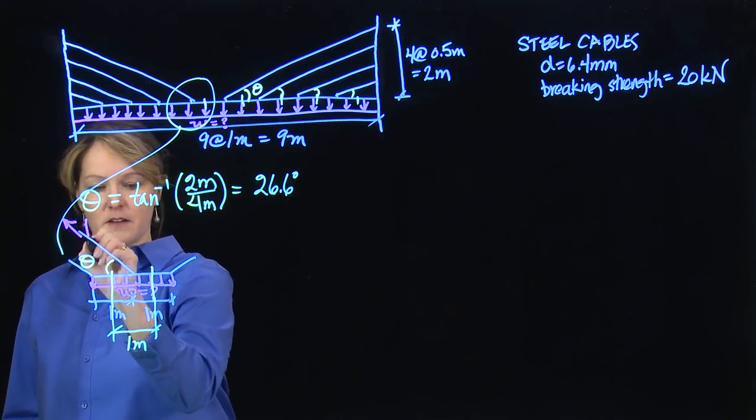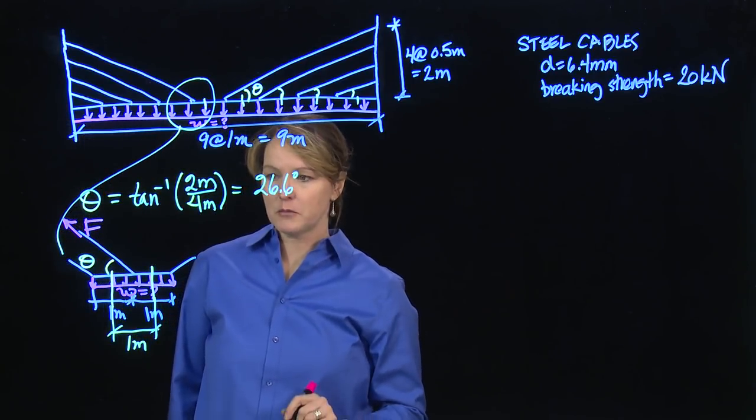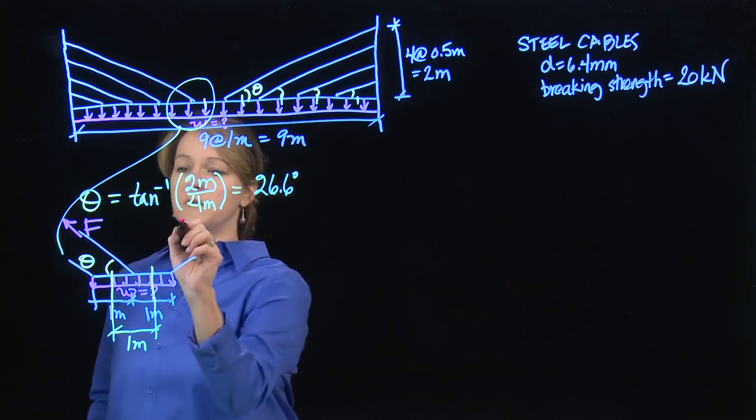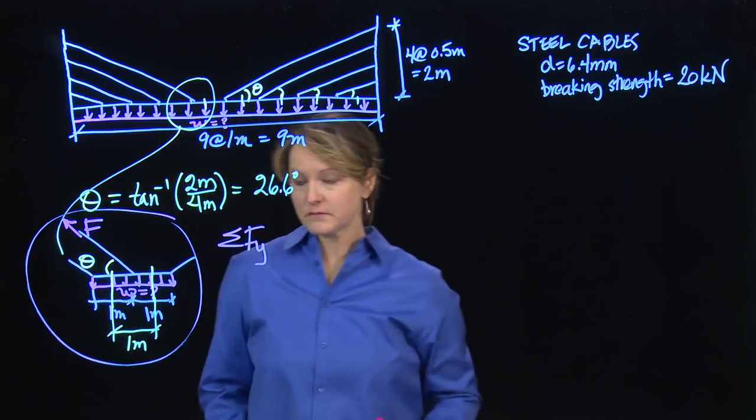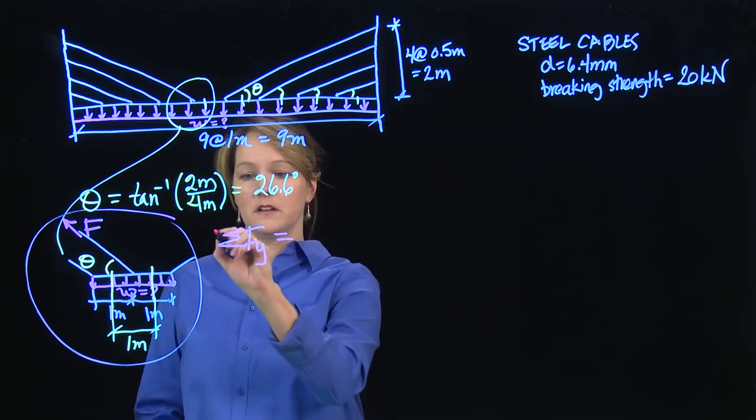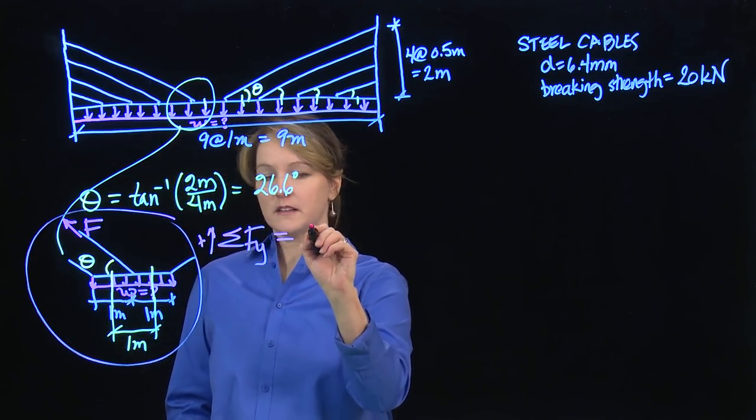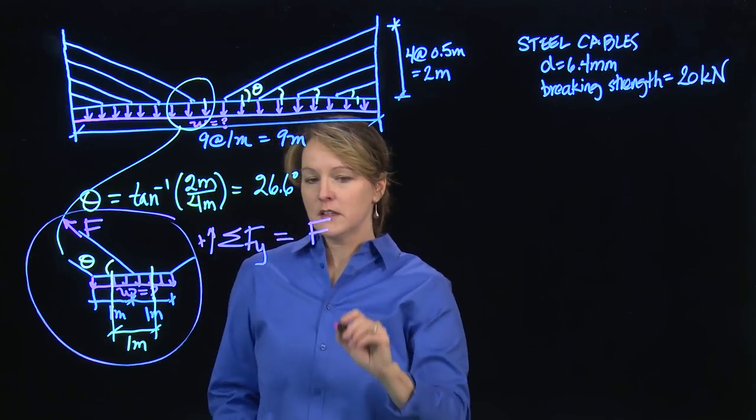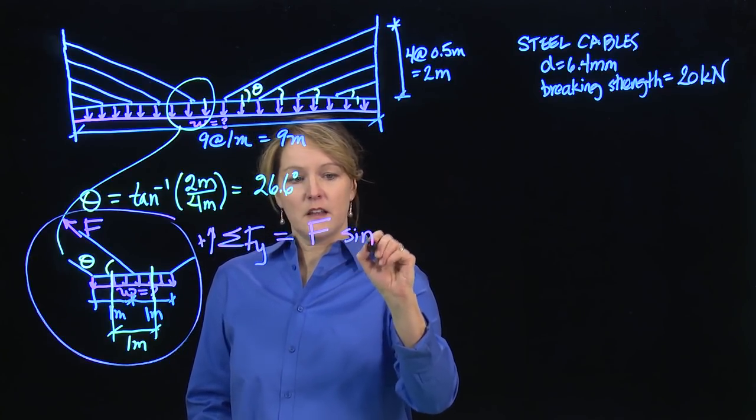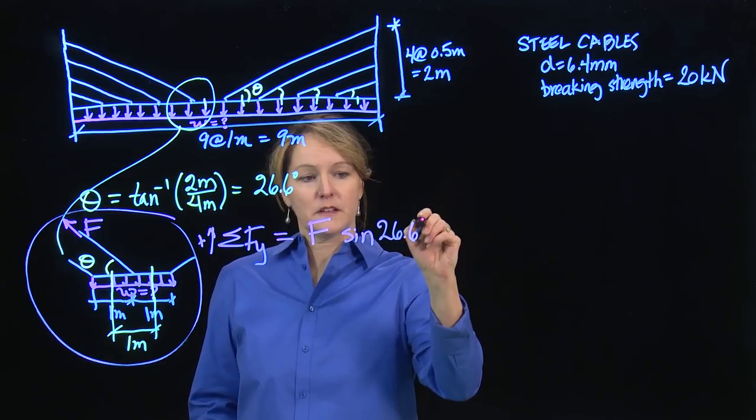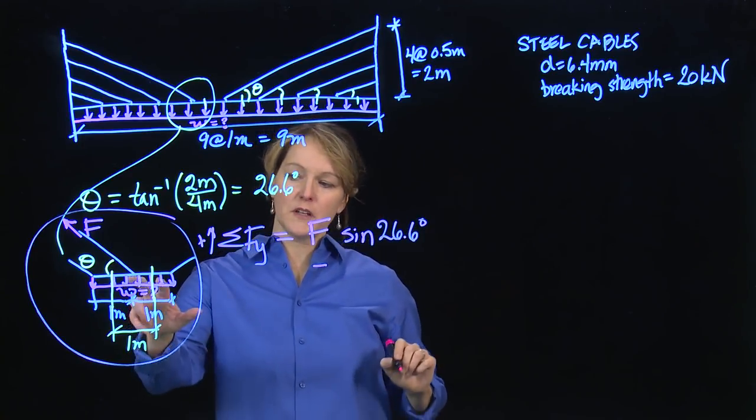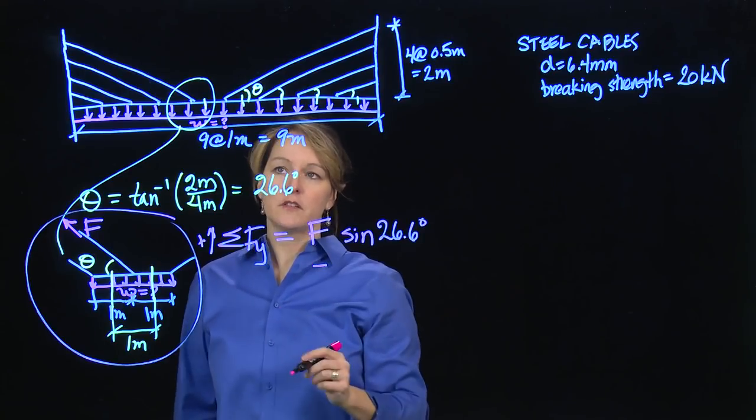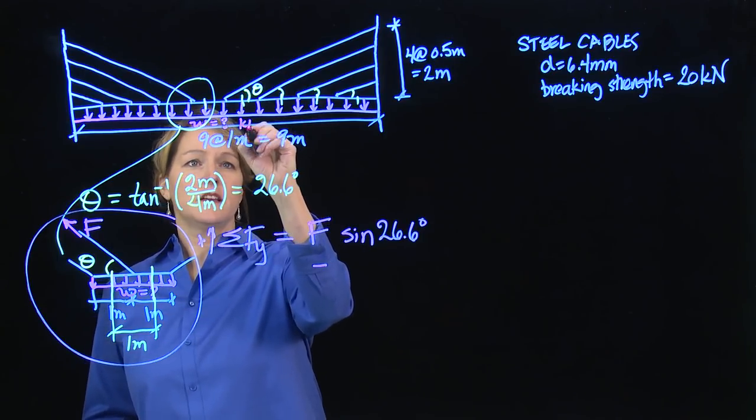So I'm going to call that F and F in the cable. And now I can go back to vertical equilibrium just on this free body. So I sum forces in the Y direction, and I have, upward positive, the force in the cable times the sine of the angle, which is 26.6 degrees. And then acting downward, I have a distributed load. Now, when I deal with this distributed load, the distributed load will have units of kilonewtons per meter.